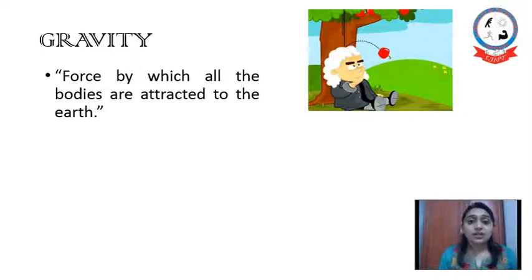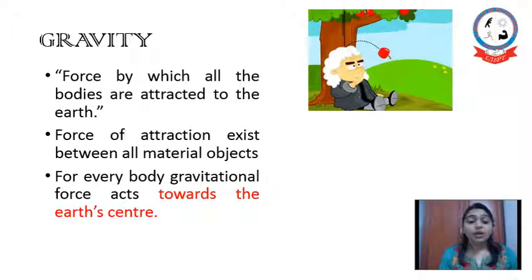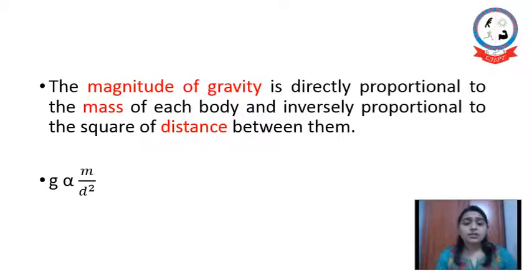Sir Isaac Newton suggested that the force of attraction exists between all the material objects and for every body gravitational force acts towards the earth's centre. He also suggested that the magnitude of gravity is directly proportional to the mass of the body and inversely proportional to the square of the distance between those two bodies.